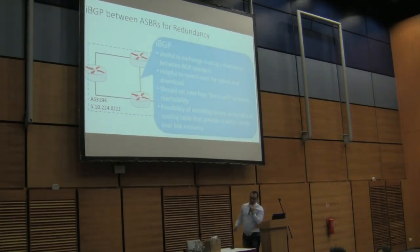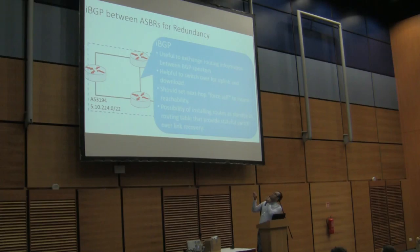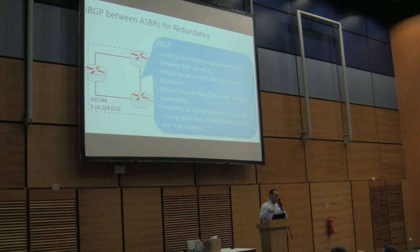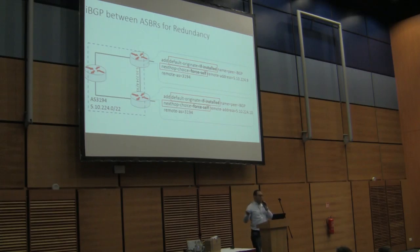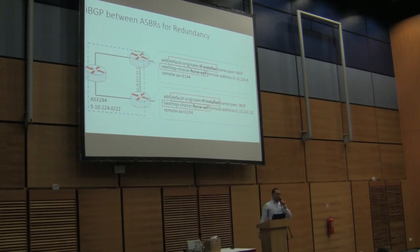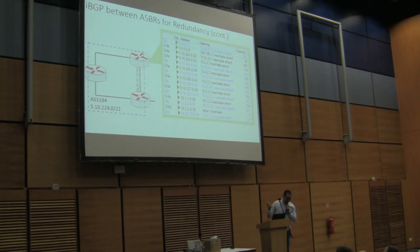iBGP is not only about redundancy — it is also useful for exchanging routing and forwarding information learned from outside between two BGP speakers. It is fully helpful for download and upload redundancy. For the configuration, it's important to set 'next-hop-self', which allows us to install redundant routes inside the routing table for faster switchover. The configuration reference: default route should be advertised only if it is installed — meaning if the default is available, update it to your peers. Next-hop should be forced to yourself, meaning don't pass through the next-hop as received; instead, advertise yourself as the next hop.